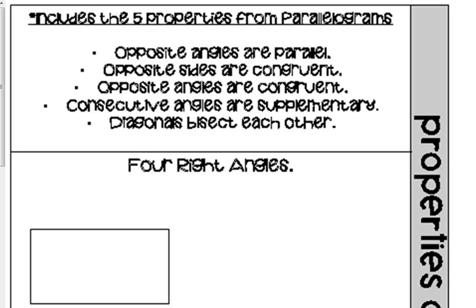The next topic is properties of rectangles. All of the following quadrilaterals are parallelograms: rectangles, squares, and rhombuses are all parallelograms, but they get a little bit more specific. At the top it says it includes the five properties from parallelograms. Rectangles are parallelograms, but we get a little bit more specific.